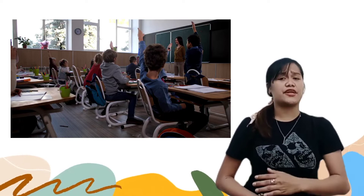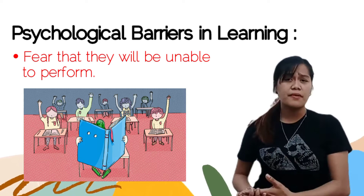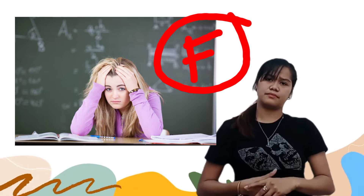Students learn at different speeds and rates. One reason for their inefficiency in learning is that they set up psychological barriers to learn. They fear that they will be unable to perform, that they will be limited in their ability to learn. And so, they fail.